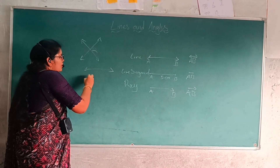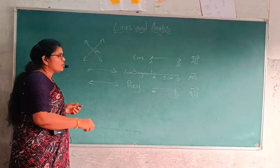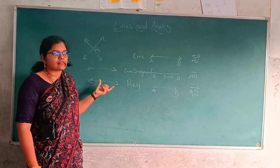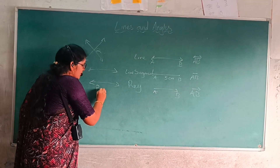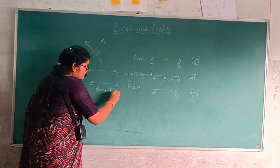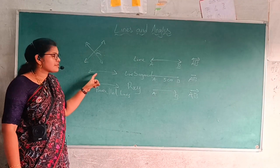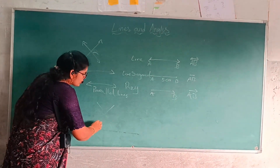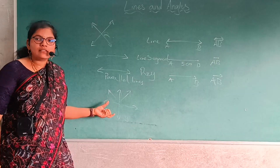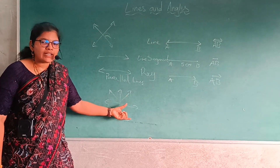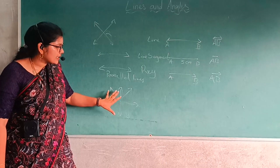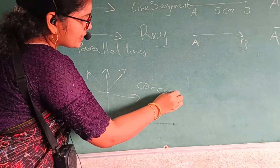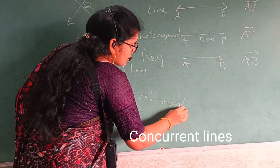Next, two lines which have no common points or no intersection points are called parallel lines — means no common points or no intersection points. And lines which are more than three lines intersecting together are called concurrent lines.